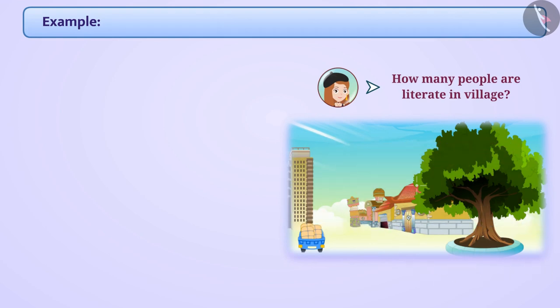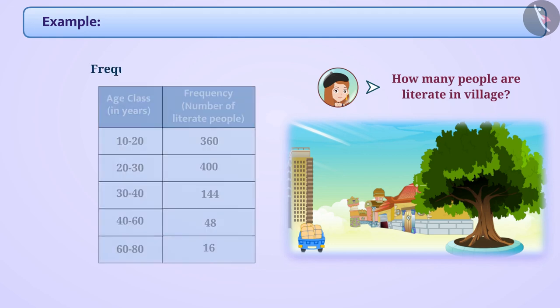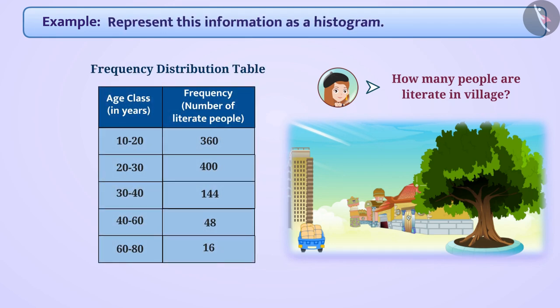The information obtained from the survey was presented by Vinita in the frequency distribution table shown below. Can you represent this information as a histogram?